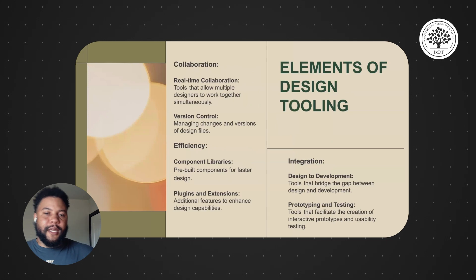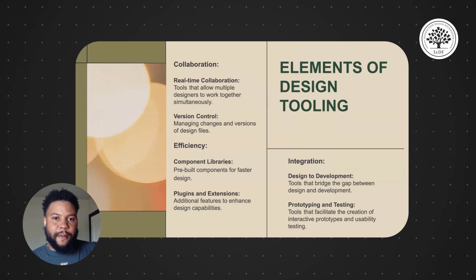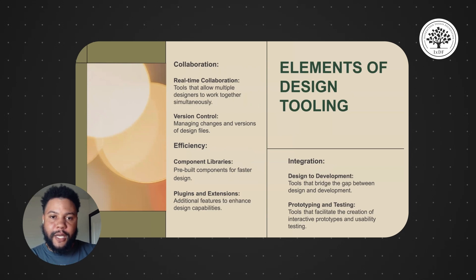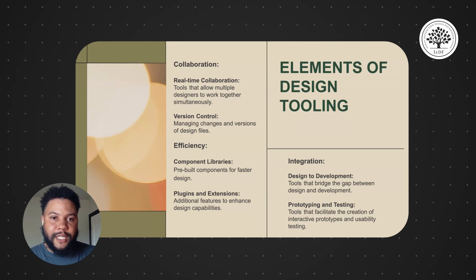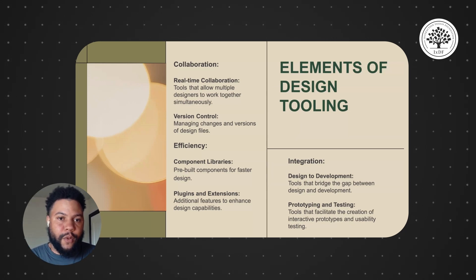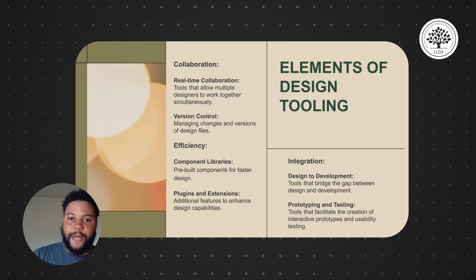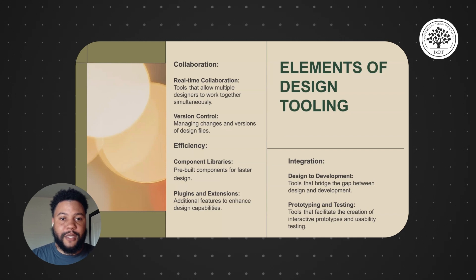The key elements of design tooling can be categorized into collaboration, efficiency, and integration. For collaboration, tools that support real-time collaboration allow multiple designers to work simultaneously, enhancing teamwork and productivity — Figma is a big one for this. Version control is another important aspect, helping manage changes and maintain different versions of design files. Efficiency comes through component libraries with pre-built components and plugins and extensions that add additional features. Integration tools are essential for bridging the gap between design and development, ensuring a smooth transition from design to implementation.